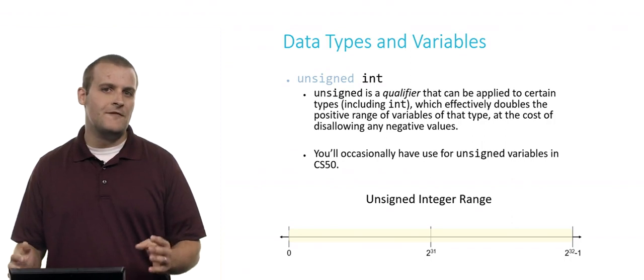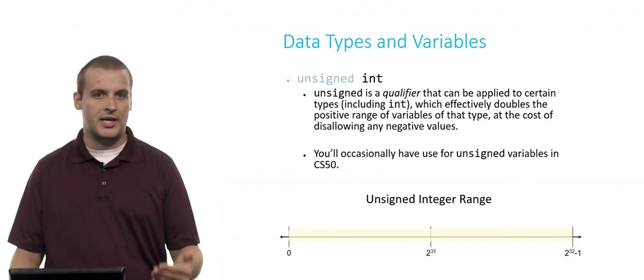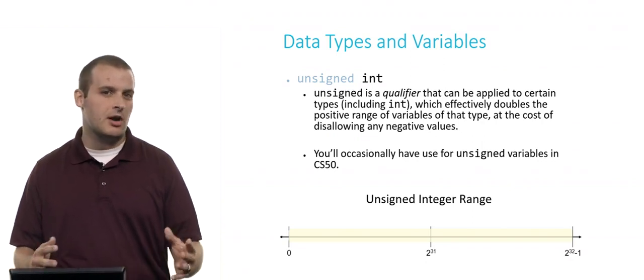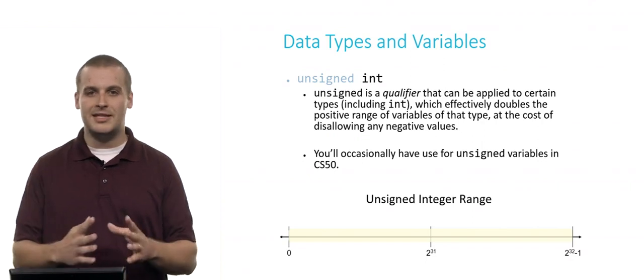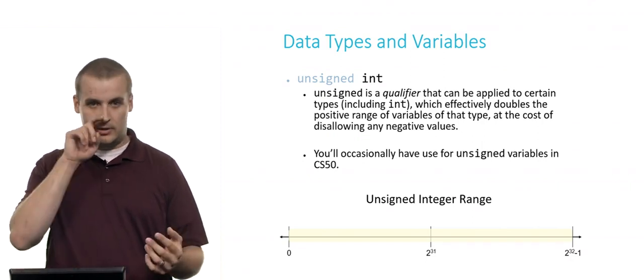But again, the range of values that you can represent with an unsigned integer, as opposed to a regular integer, are 0 to 2 to the 32nd power minus 1, or approximately 0 to 4 billion. So you've effectively doubled the positive range that you can fit, but you've given up all of the negative values.